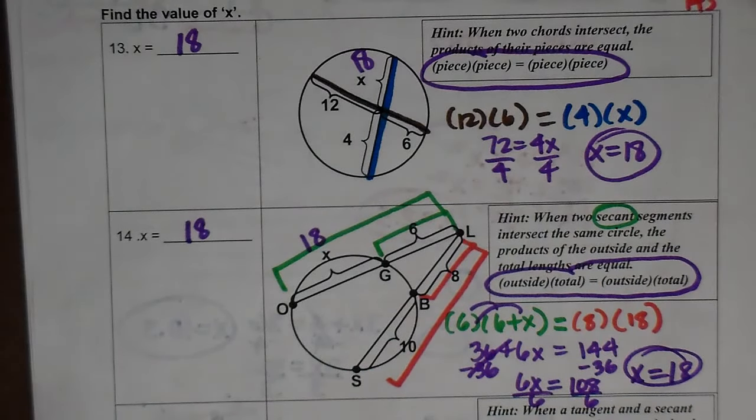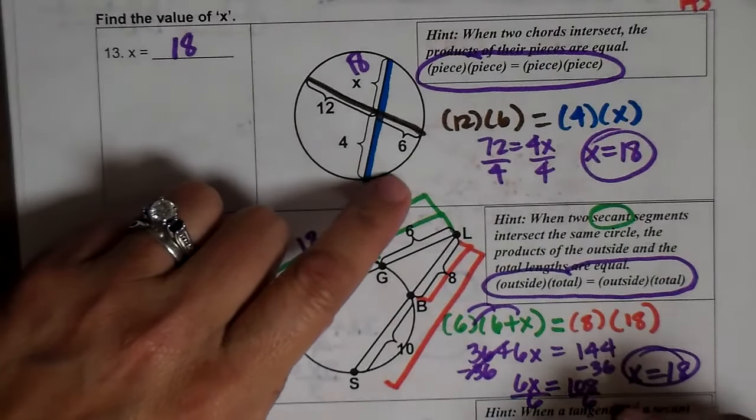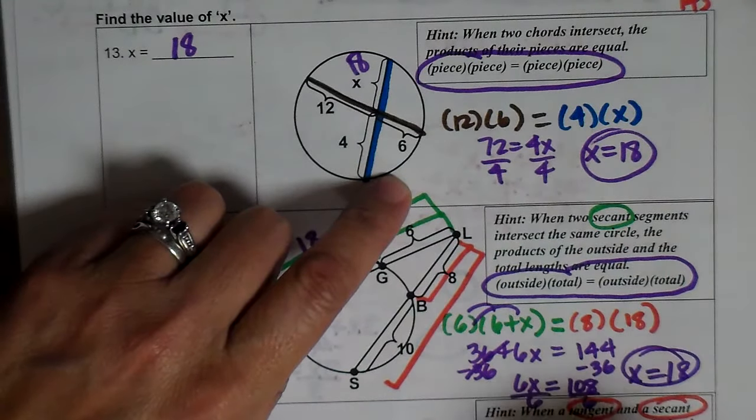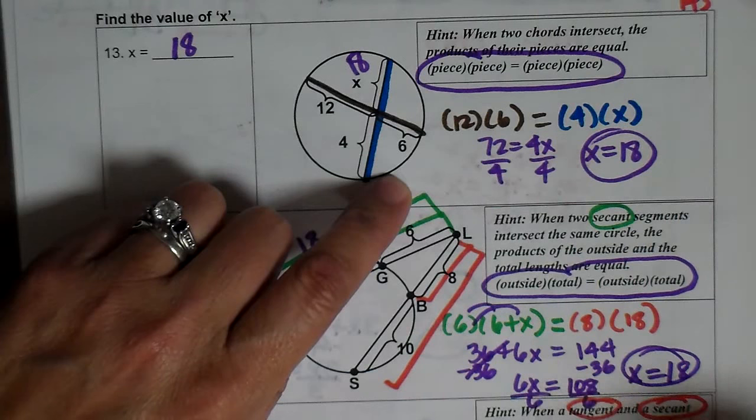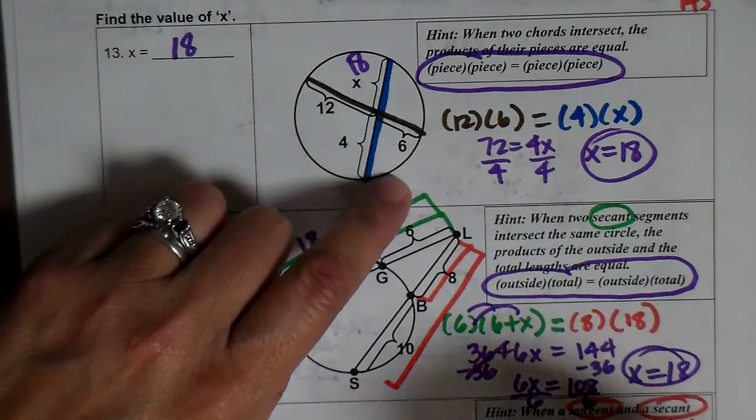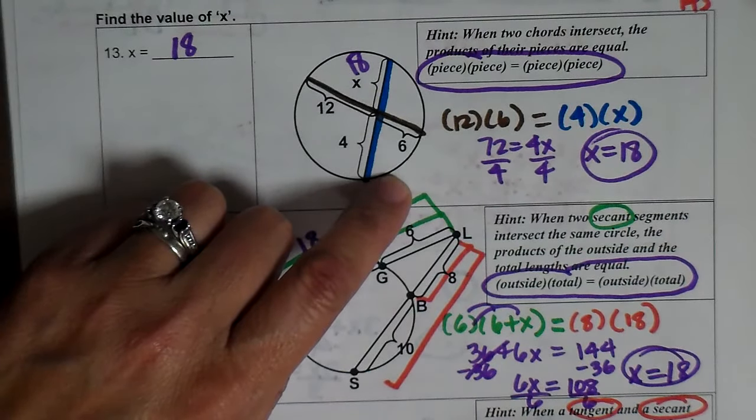All right. Let's look at a secant and a tangent. When you have a tangent and a secant, outside times total equals the tangent squared. So 4 times 4 plus x, which is the whole thing.